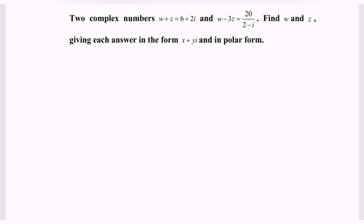Hello everyone, welcome to my channel. In this video I'm going to discuss an example for complex numbers. Given two complex numbers: w plus z equals 6 plus 2i, and w minus 3z equals 20 over (2 minus i). Find the complex numbers w and z, giving each answer in the form x plus yi and in polar form.